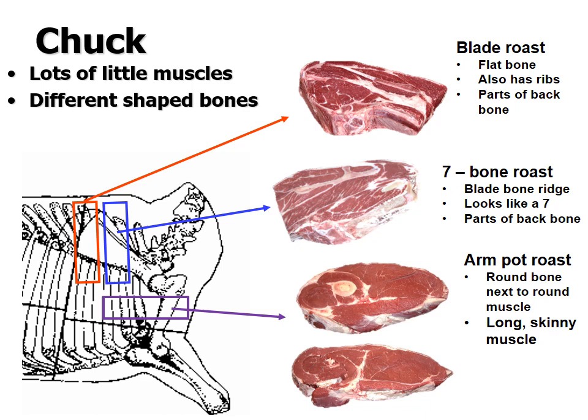Starting with beef chuck cuts: you can see lots of little muscles, so you know you're in the front end. The blade roast has a flat blade bone visible, sometimes with big chunks of rib and part of the backbone. The seven-bone roast uses the same bone as the blade, but a ridge on that bone makes a seven-bone shape when cut across. You may also see part of the backbone and lots of little muscles.